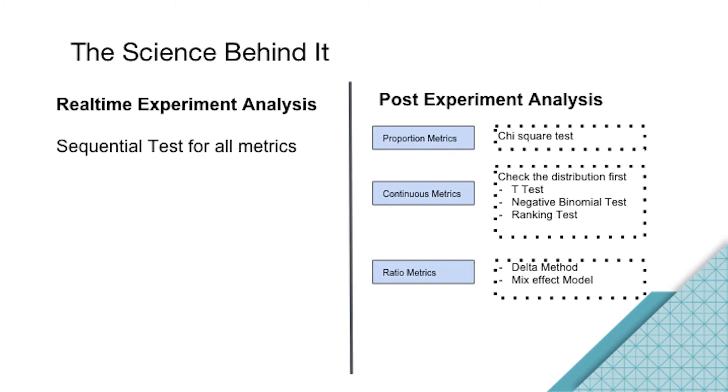Proportion metrics would be like the number of drivers who complete the first trip in 14 days. Continuous metrics will be like the supply hour of the driver in this experiment. Ratio metrics will be the number of trips divided by the number of sessions. We use chi-square for proportion metrics. For continuous metrics, we check the distribution first, then we see if it fits into the t-test. If it doesn't, we check if we can use binomial test and ranking test. For ratio metrics, we use two main methods: the delta method and the mixed effect model.